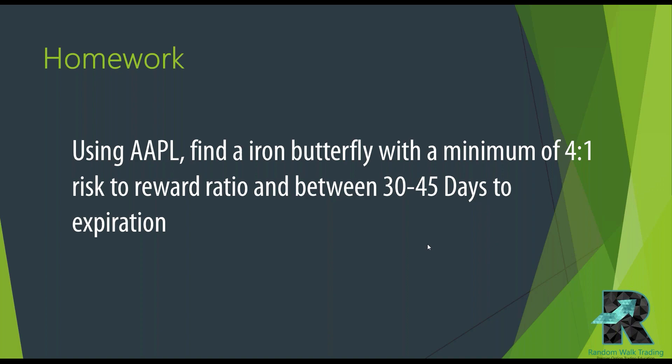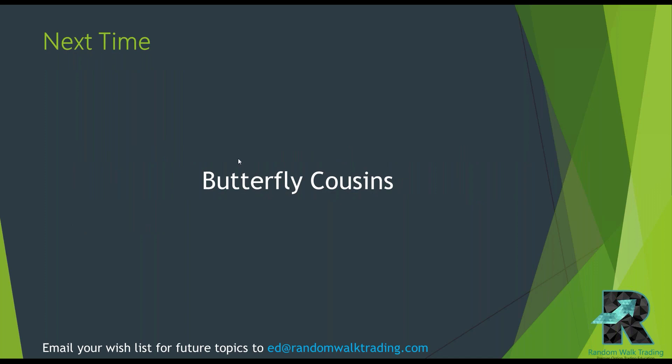Homework assignment: using Apple, find an iron butterfly with a minimum four-to-one risk reward, between 30 and 45 days to expiration. Take a screenshot, email it to me with some of your logic — what you think the underlying is doing, your prognosis. We all look at charts differently so that will be a good mental exercise. Next time we're going to cover the butterfly cousins — the broken wing butterfly — so that'll be our next topic on the first Tuesday of the month.